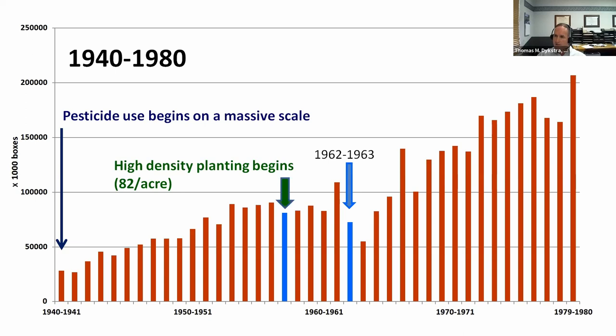Even though pesticide use had already begun on a massive scale, the arrival of the citrus root weevil caused us to quickly add two additional insecticides and a fungicide in short order. Stress levels on the citrus trees are visibly increasing. We can see that things are being compromised — and then another freeze comes in the 1977–1978 season. For the second time in a row, we did not recover the following year; recovery now takes two full years instead of one.